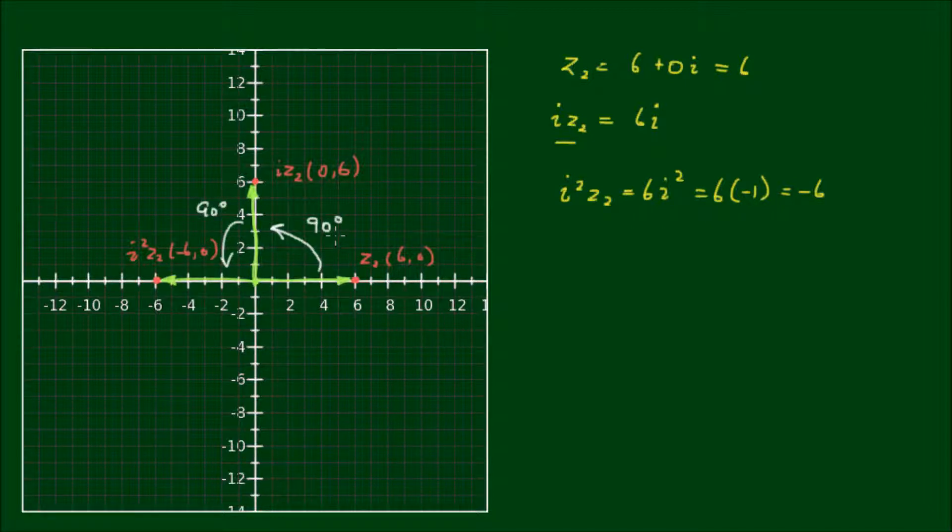So the general rule here is when we multiply a complex number by i, graphically, on the complex plane, it is a rotation of that complex number by 90 degrees anticlockwise.